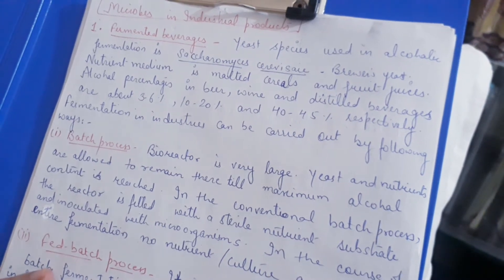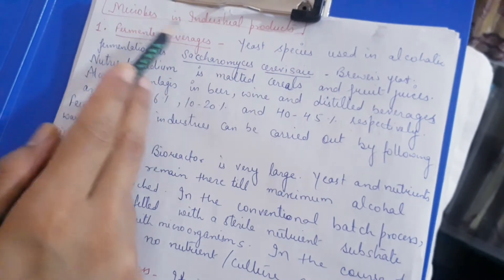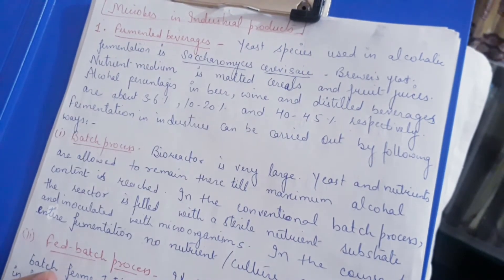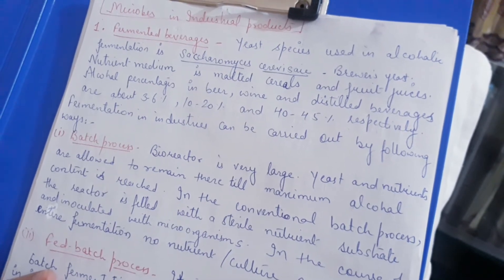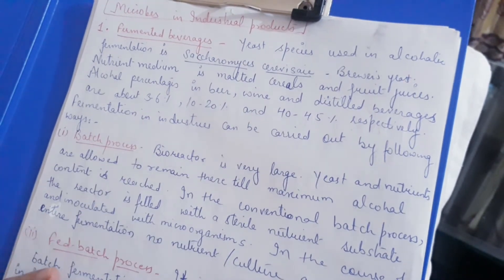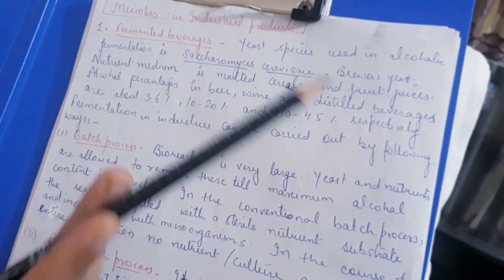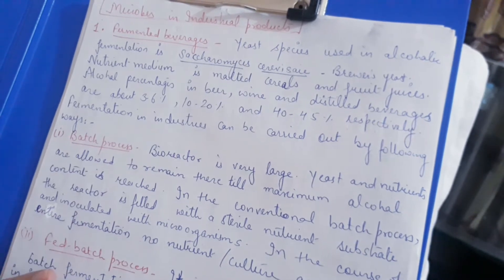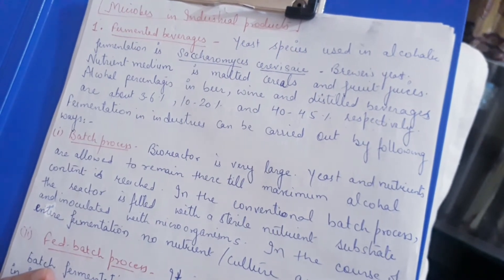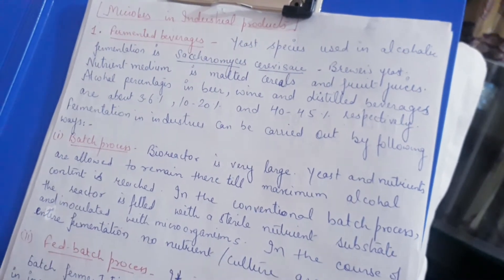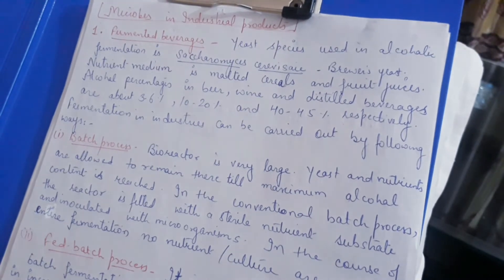In this session we are going to discuss the topic microbes in industrial products — how microorganisms help in industrial products. In our last videos we already discussed how microorganisms are used in production of household products. Now we will discuss how microorganisms are helpful in production of industrial products.